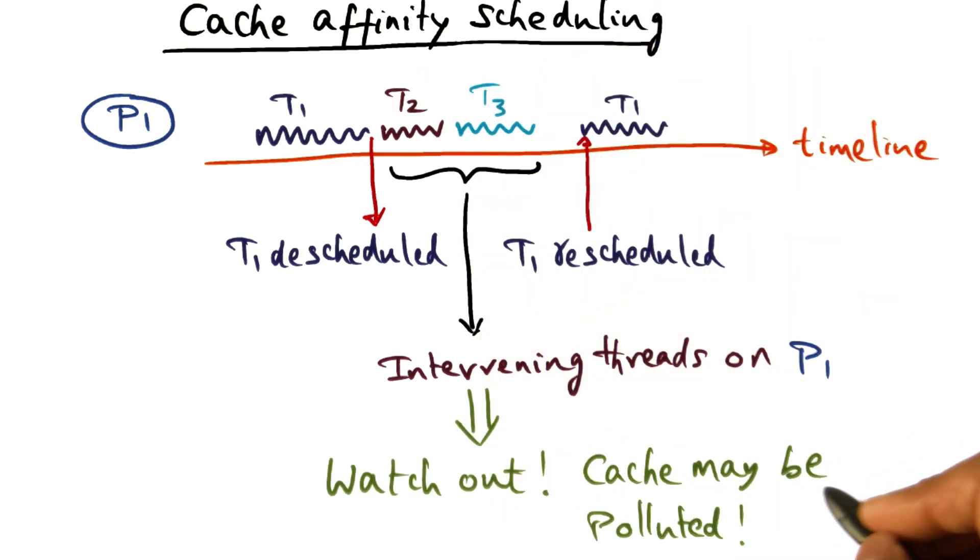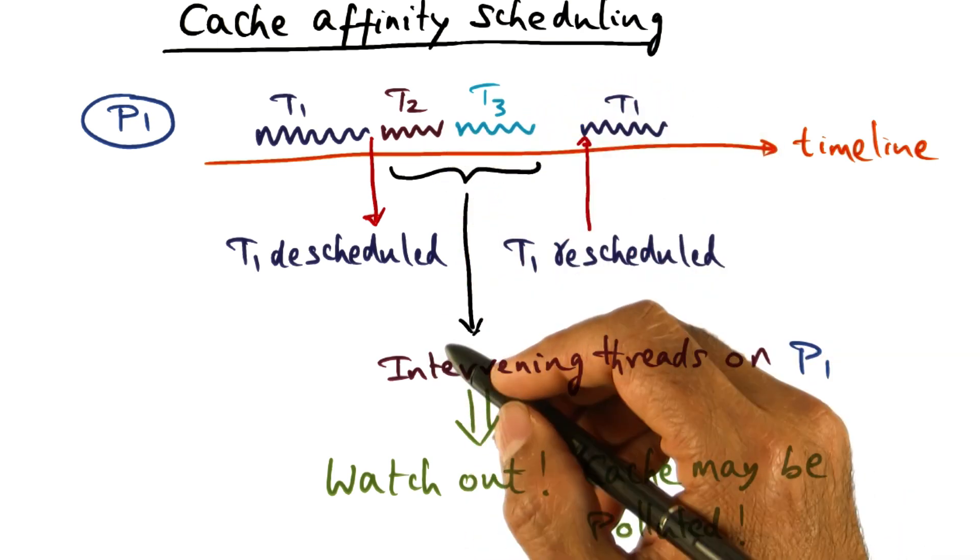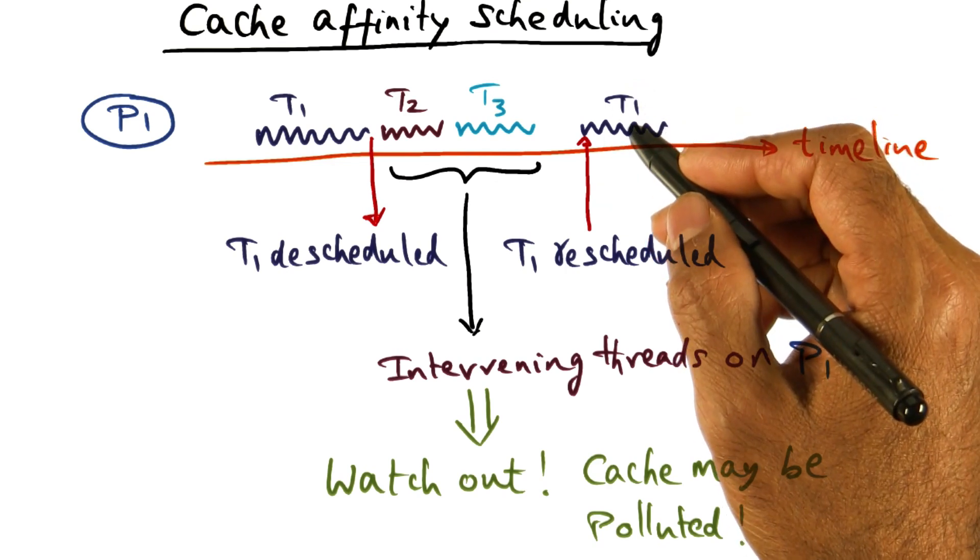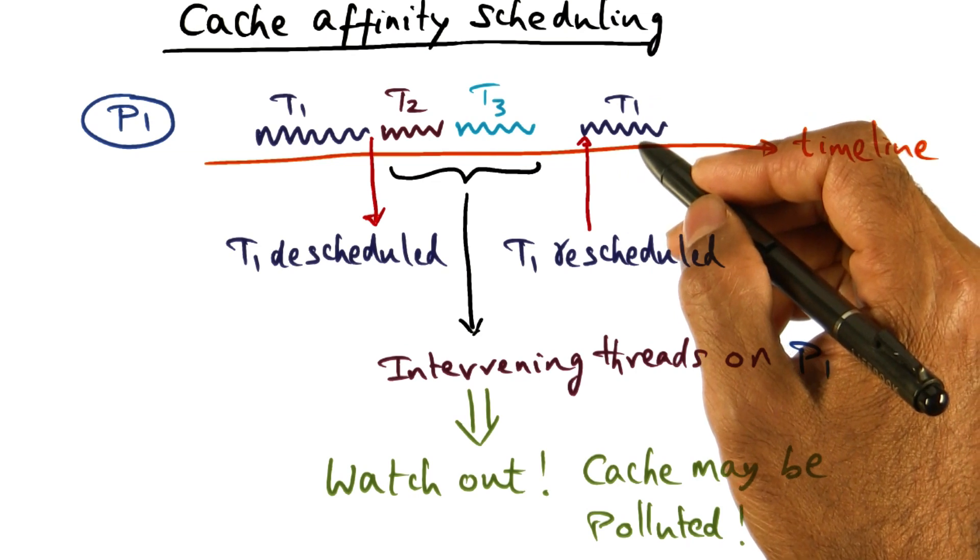So watch out. The cache may be polluted by the contents of threads T2 and T3, as far as T1 is concerned. So when T1 runs again, it's quite possible that it may not find a lot of its memory contents in the cache.